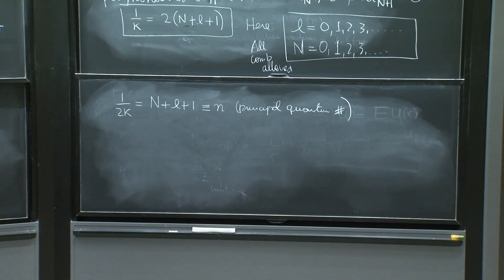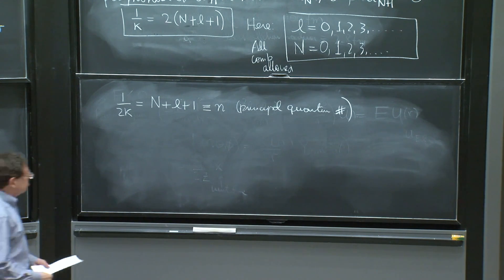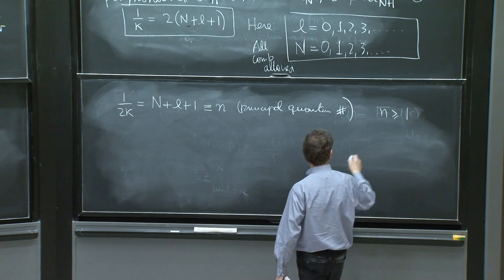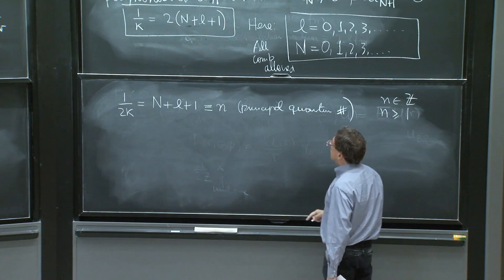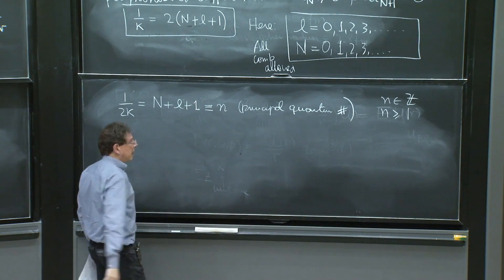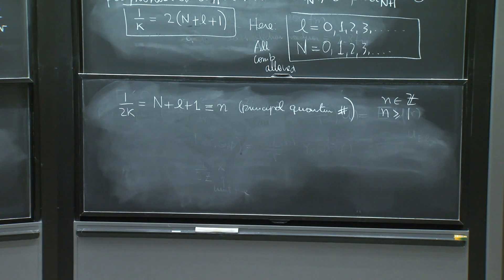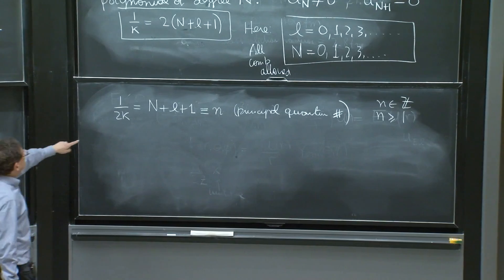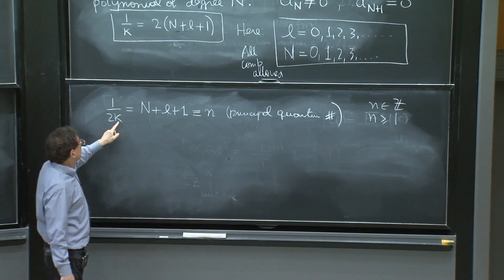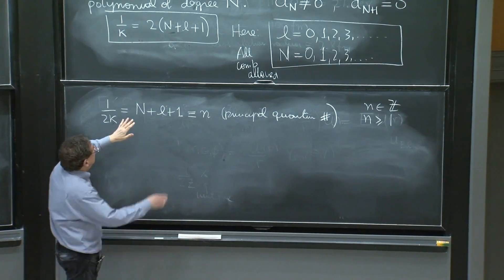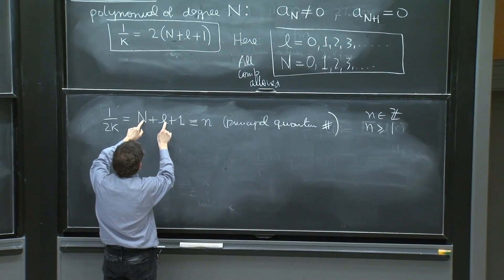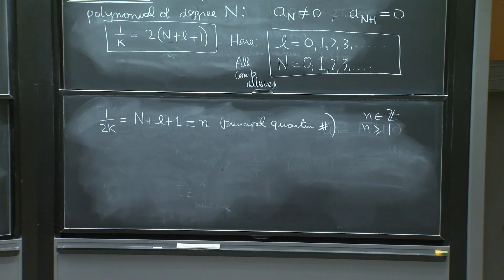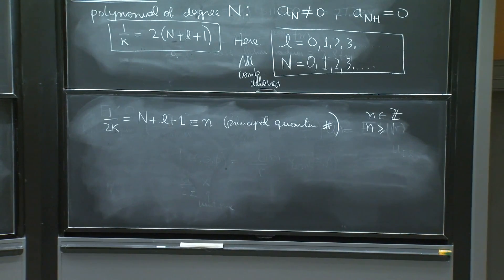So n is the principal quantum number. And in some sense, well, you know that n has to be greater or equal than 1. It's an integer and has to be greater or equal than 1 because of this 1 here, and because the other ones cannot be negative either. So n is a principal quantum number, and it's a fundamental number because it immediately gives you the value of the energy, which we will write more physically shortly. But it hides within it a degeneracy that is allowed because of these different numbers. So these different numbers have to do with the degree of the polynomial and the value of L that you are using.